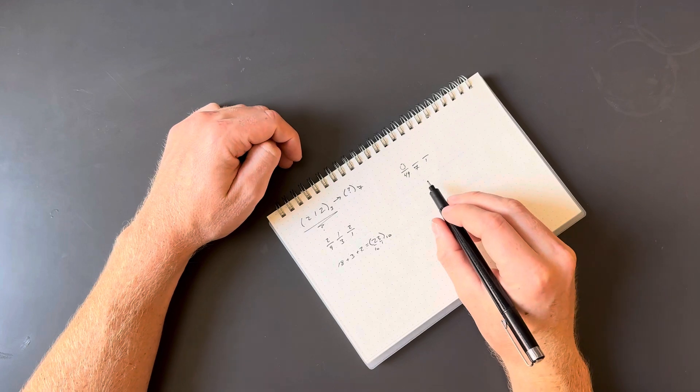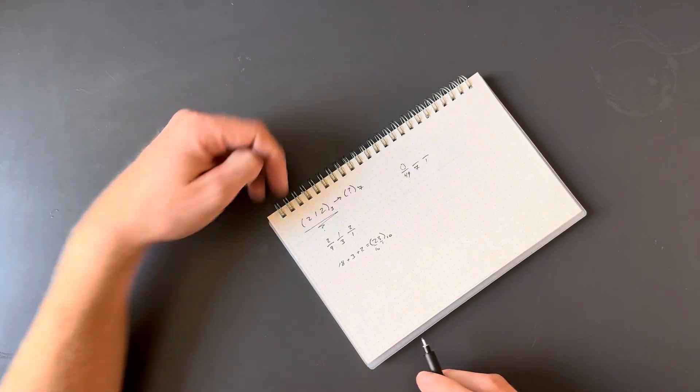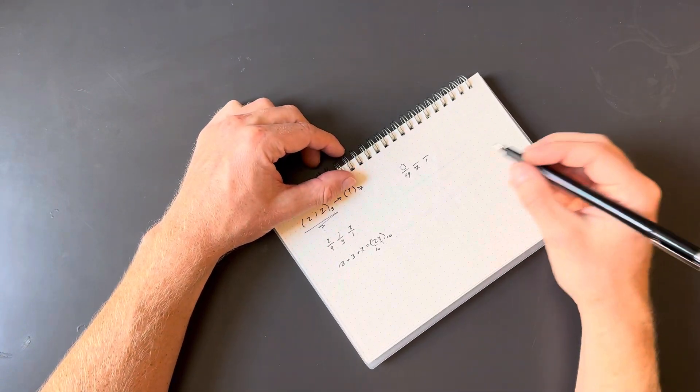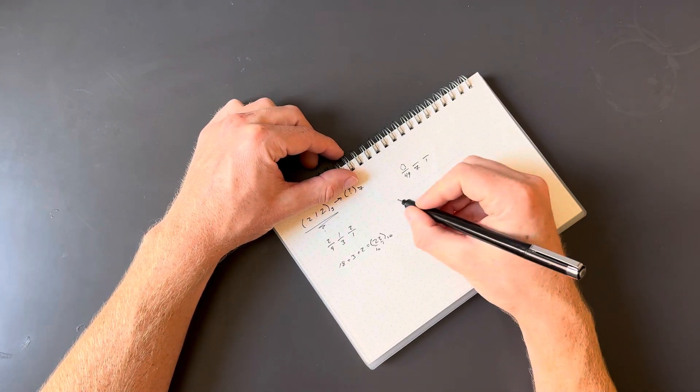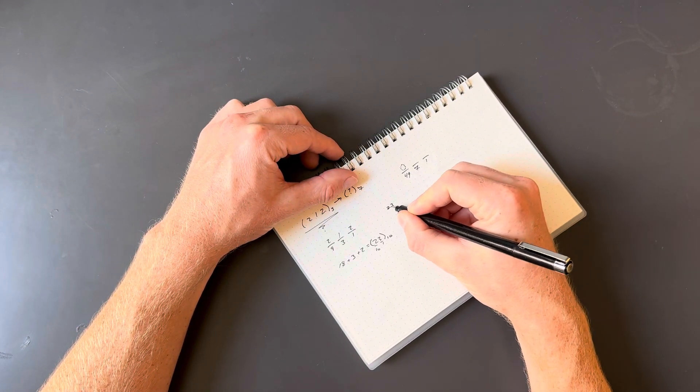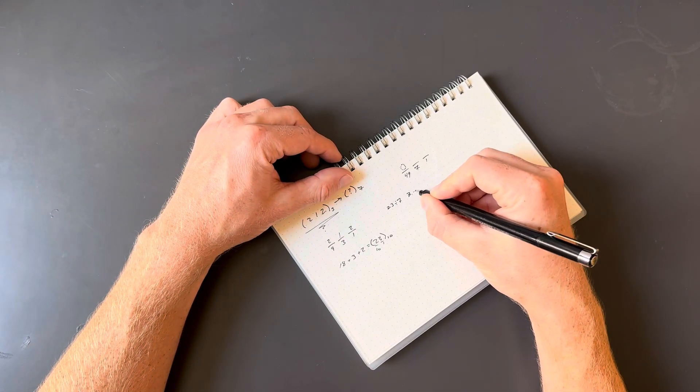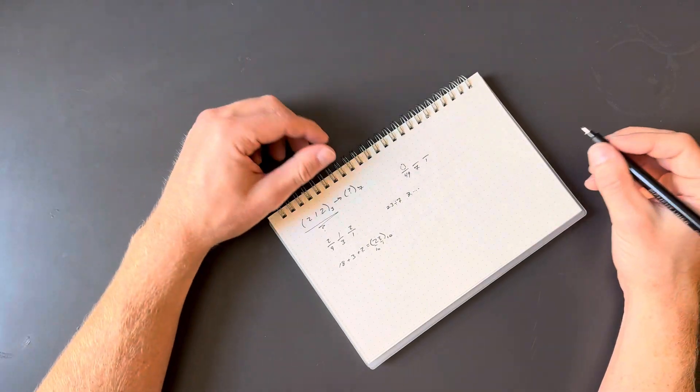So then we have to think about how many 7s can we fit into the quantity we're trying to arrive at? 23. Well, you could take a calculator out and say, you know, 23 divided by 7, and it would give you 3 point something. A little more than 3.